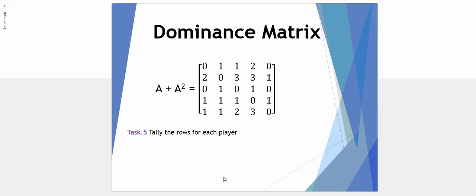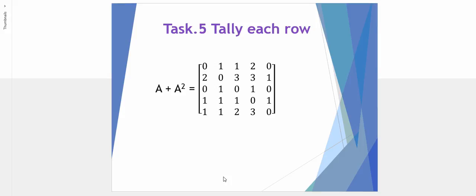Now finally all we need to do is total the rows for each player. So player A going across the row, because this represents all A's dominance, we have a total score of 4: 1 plus 1 is 2, plus 2 is 4. Player B has a total dominance score of 9. C has 2, D has 4 and E has 7. Finally, there's our dominance scores.